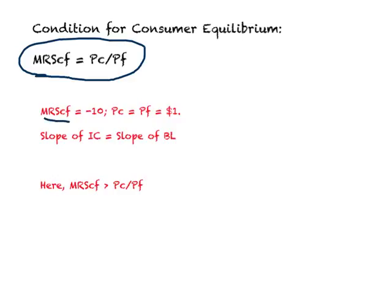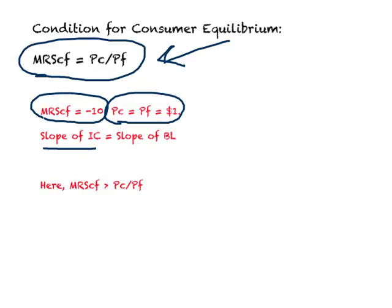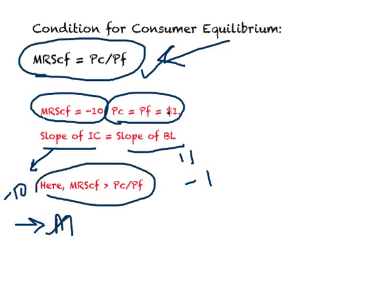Consider the following example: suppose MRS is given as negative 10, and the price of clothing equals the price of food, both equal to 1. For equilibrium, MRSCF must equal PC divided by PF. We calculate PC/PF as 1 divided by 1, giving 1, so the slope of the budget line is negative 1. But the slope of the indifference curve is negative 10. The marginal rate of substitution between clothing and food is greater than the price ratio — this is clearly not an equilibrium point.